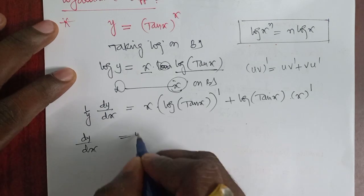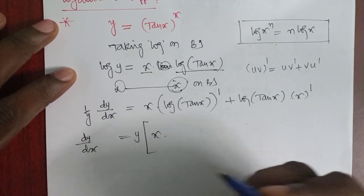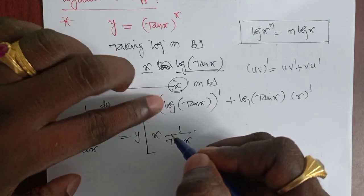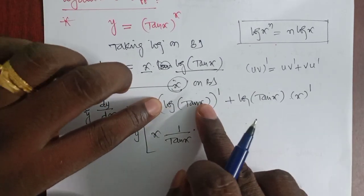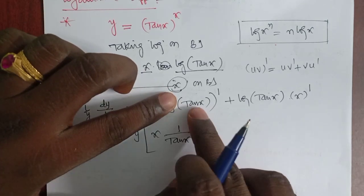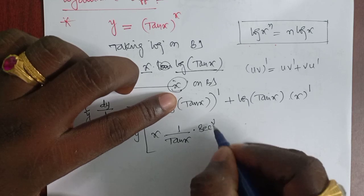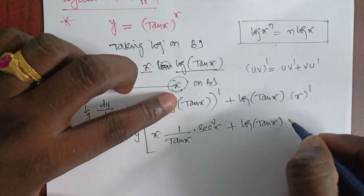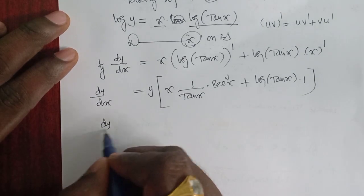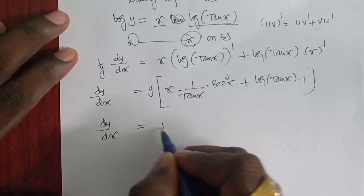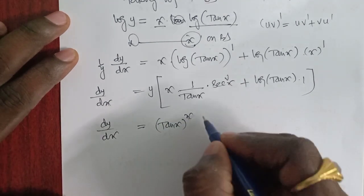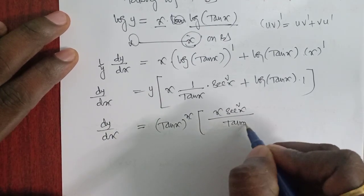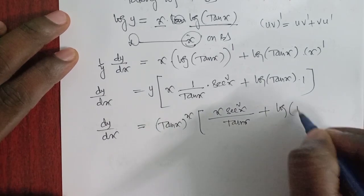Sending y to the right side, and using the chain rule for log(tan x) — derivative of log is 1/tan x, multiplied by sec²x (derivative of tan x) — plus log(tan x) · 1. Finally, dy/dx = (tan x)^x · [x · sec²x / tan x + log(tan x)].